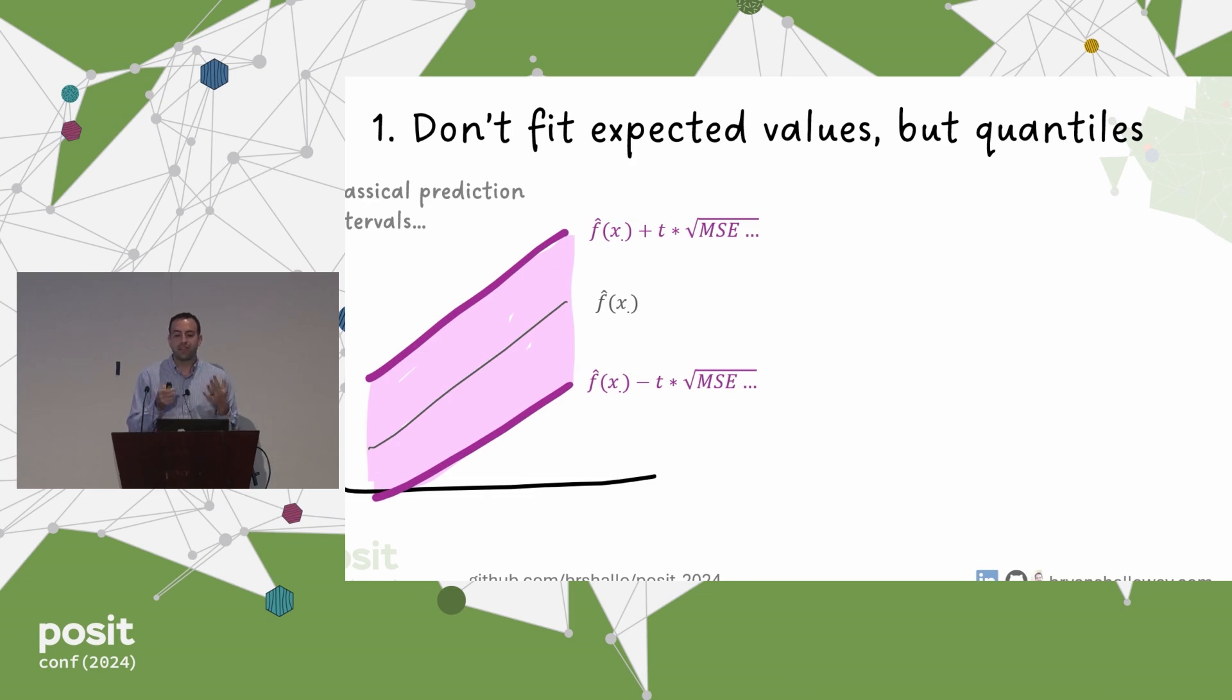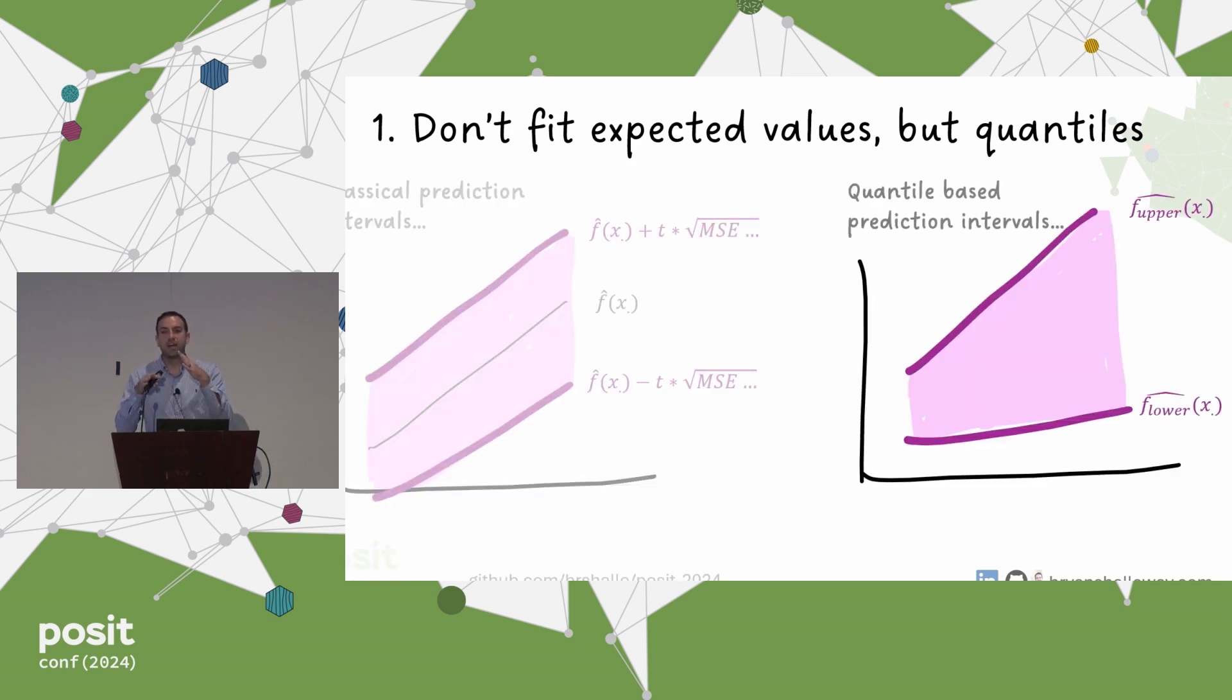In quantile regression, you don't actually even need the model fit based off of expected value. What you're doing is you're fitting models directly on those lower and upper bounds. So let's say we want prediction intervals that are 80% prediction intervals. In this case, our lower bound is a model that's actually being fit to the 10th percentile of data, and our upper bound is the model that's being fit to the 90th percentile of data. In this case, rather than saying give me a model for the expected value, we're saying give me two models, one for my lower bound and one for my upper bound. And I'm just directly predicting those bounds.